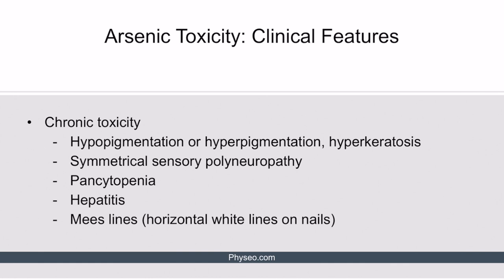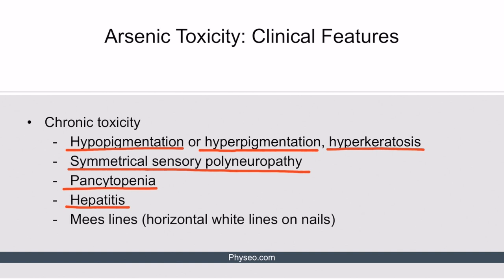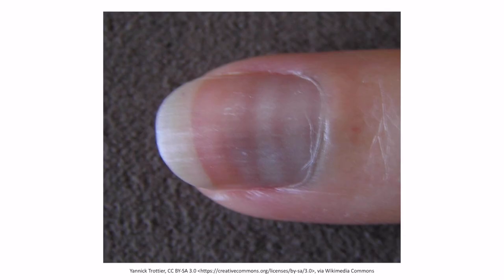Chronic arsenic toxicity can lead to skin changes such as hypopigmentation, hyperpigmentation, or hyperkeratosis. It can also lead to symmetrical sensory polyneuropathy often in stocking-glove distribution, pancytopenia, hepatitis, and a unique finding known as Mees' lines, characterized by horizontal white lines on the nails. Here's an example of Mees' lines on physical exam — notice the horizontal white lines on the nail that form due to disruption of the nail matrix keratinization.